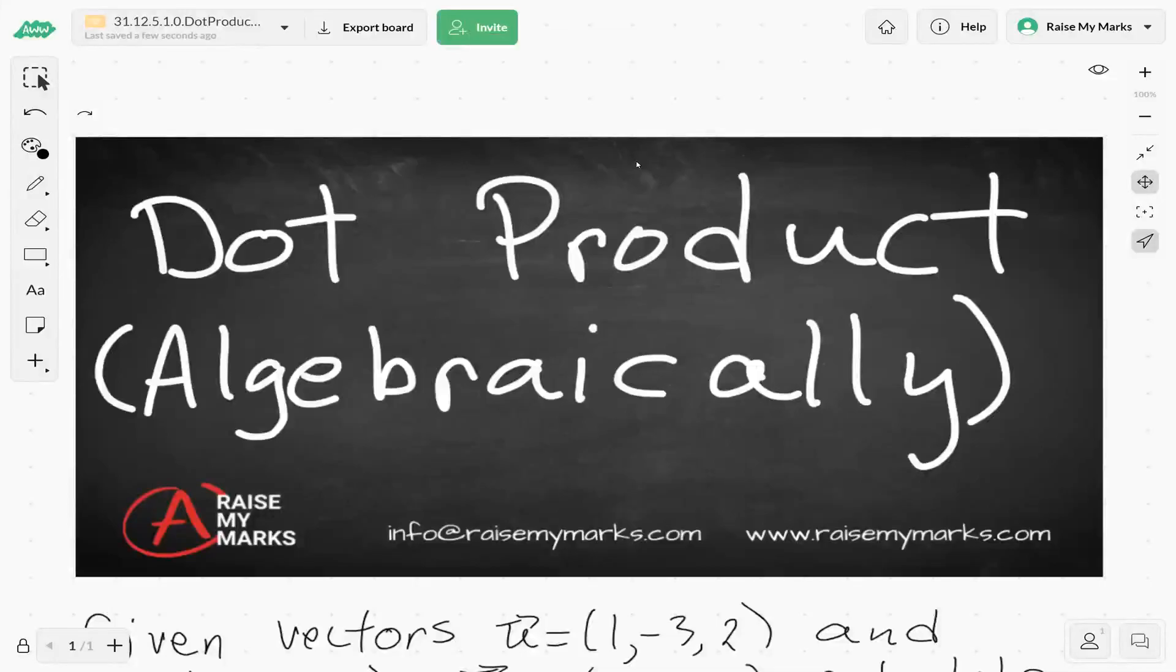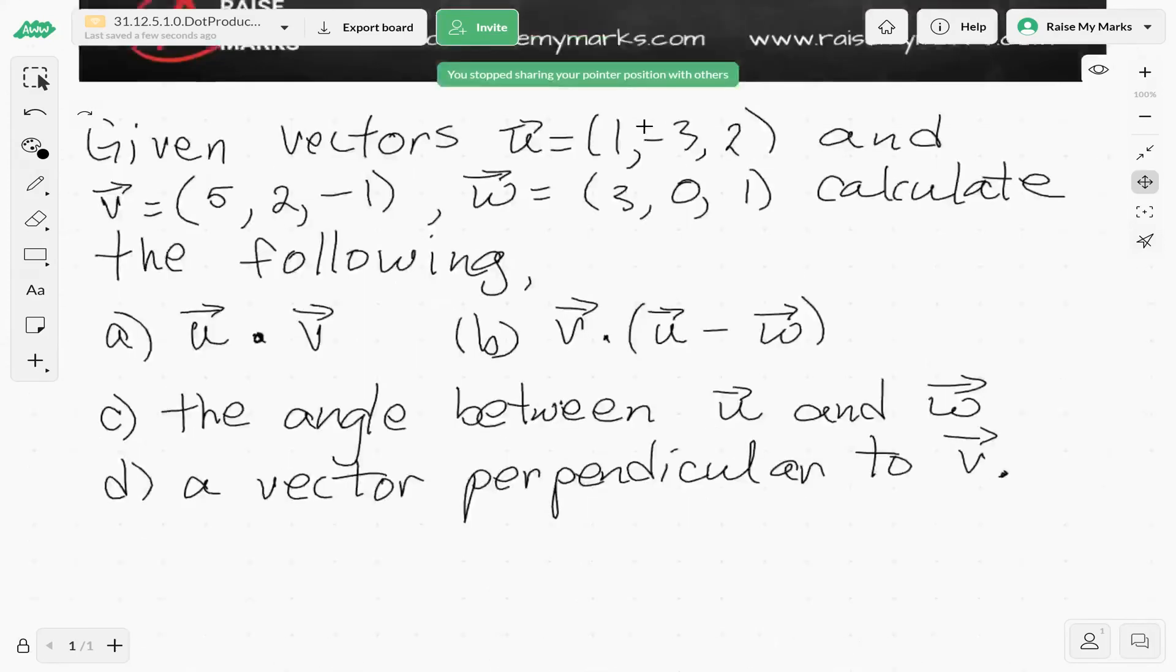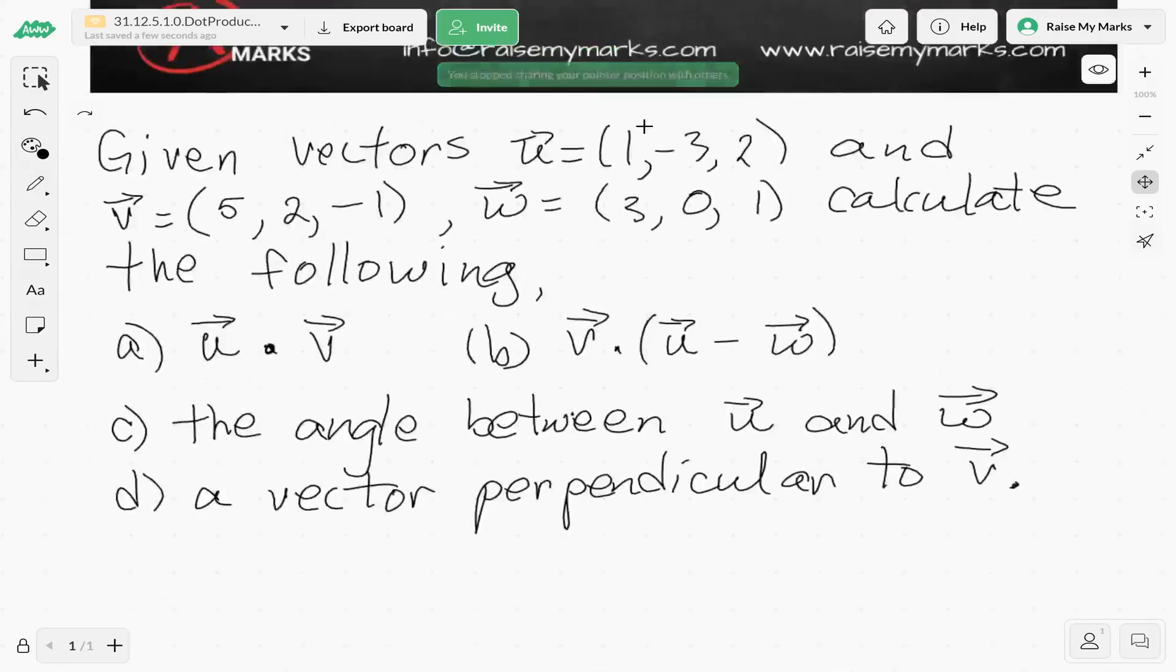Hello, so today we're looking at the dot product again, but looking at it algebraically. We're given vectors u=(1,-3,2), v=(5,2,-1), and w=(3,0,1), and we're asked to calculate the following: some dot products, some angles, and a vector perpendicular to v.